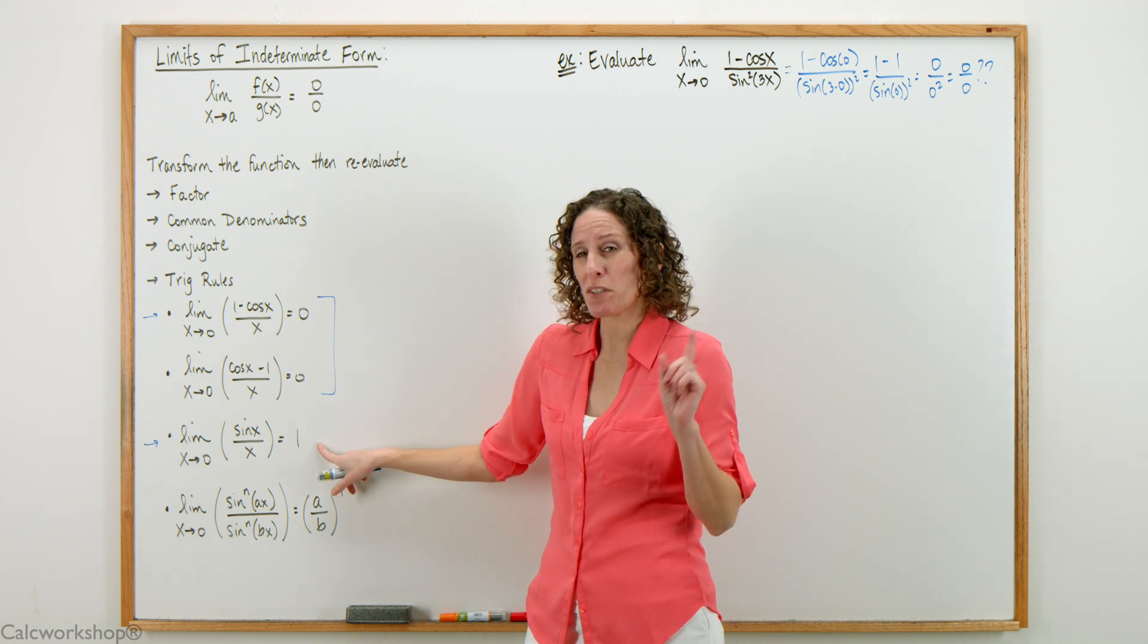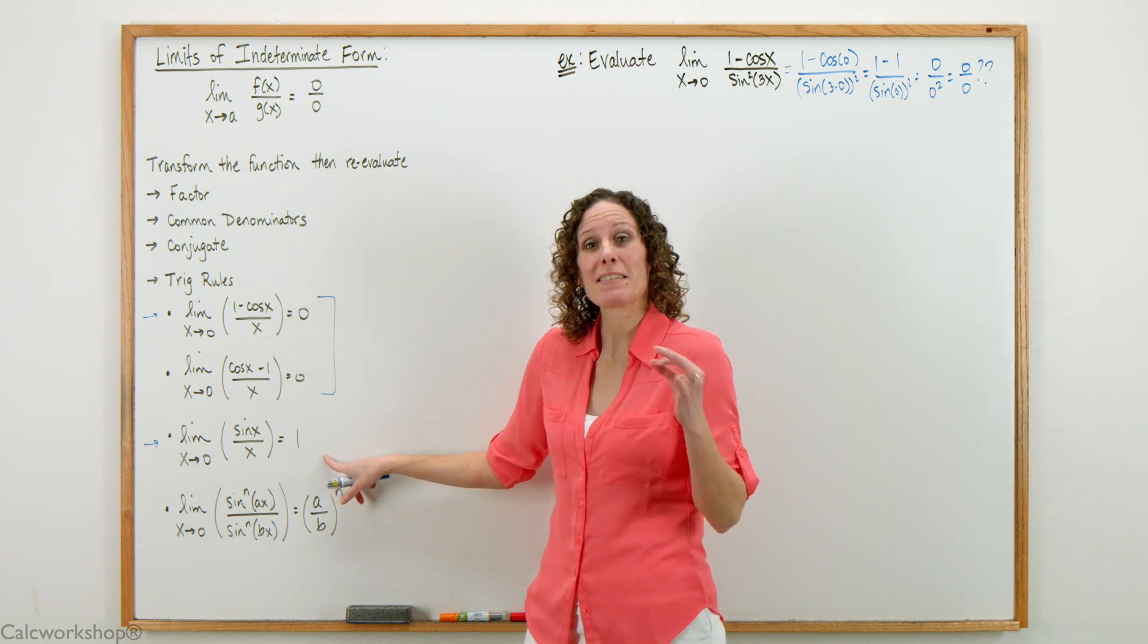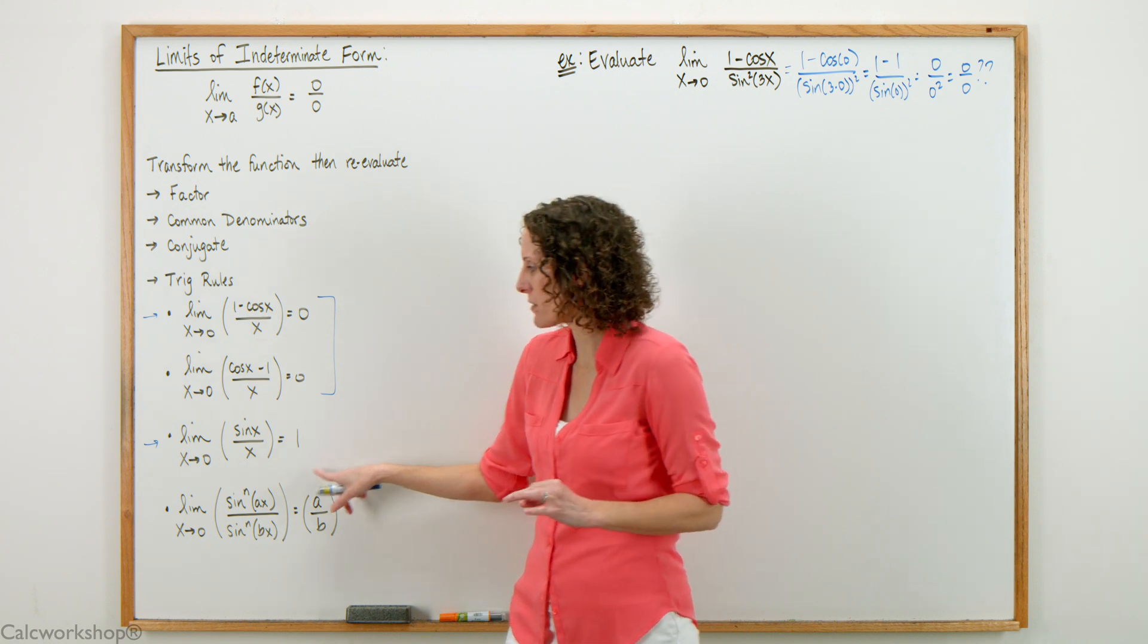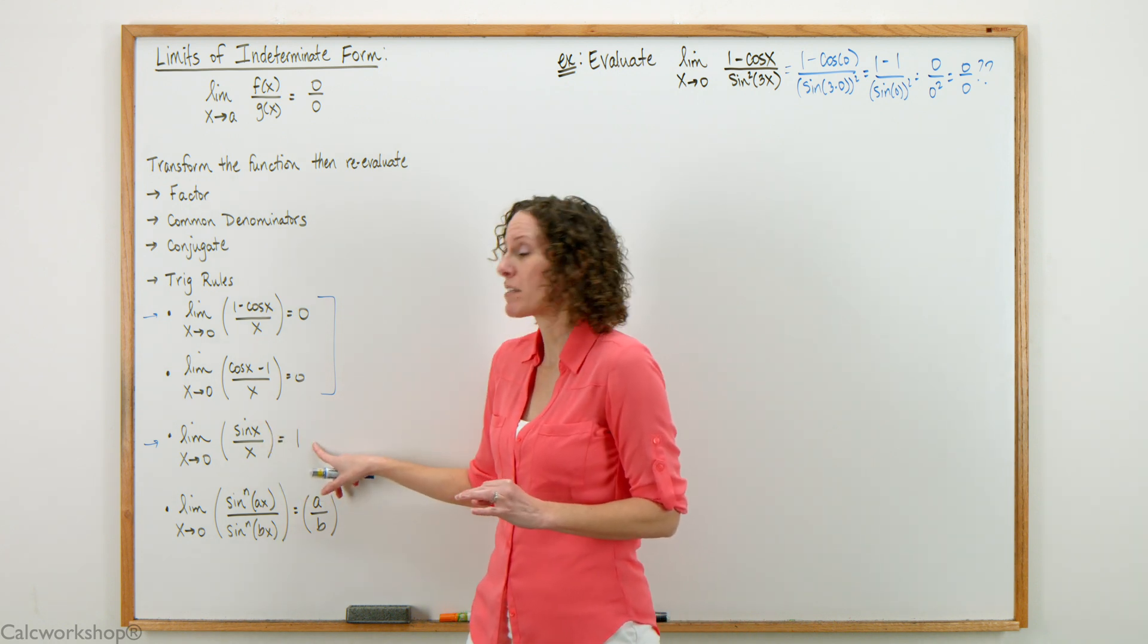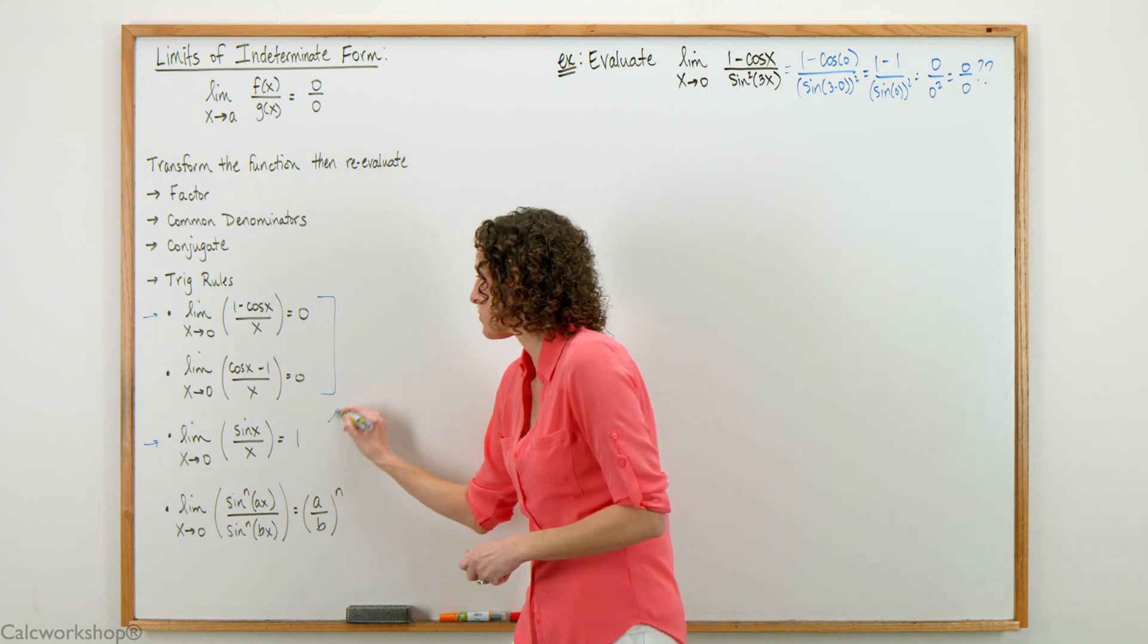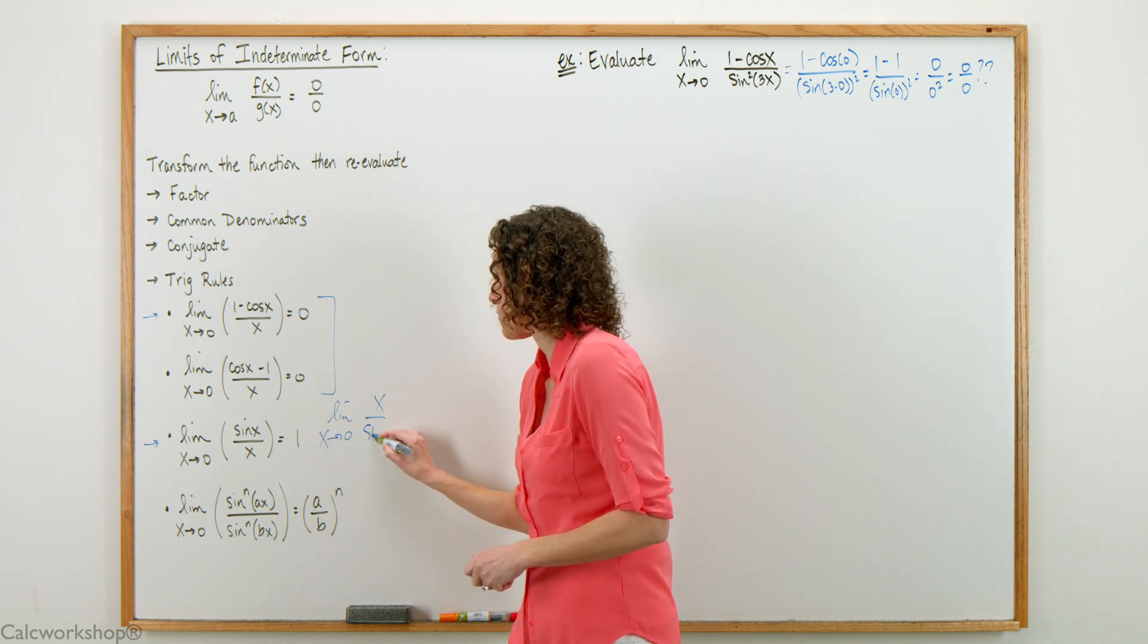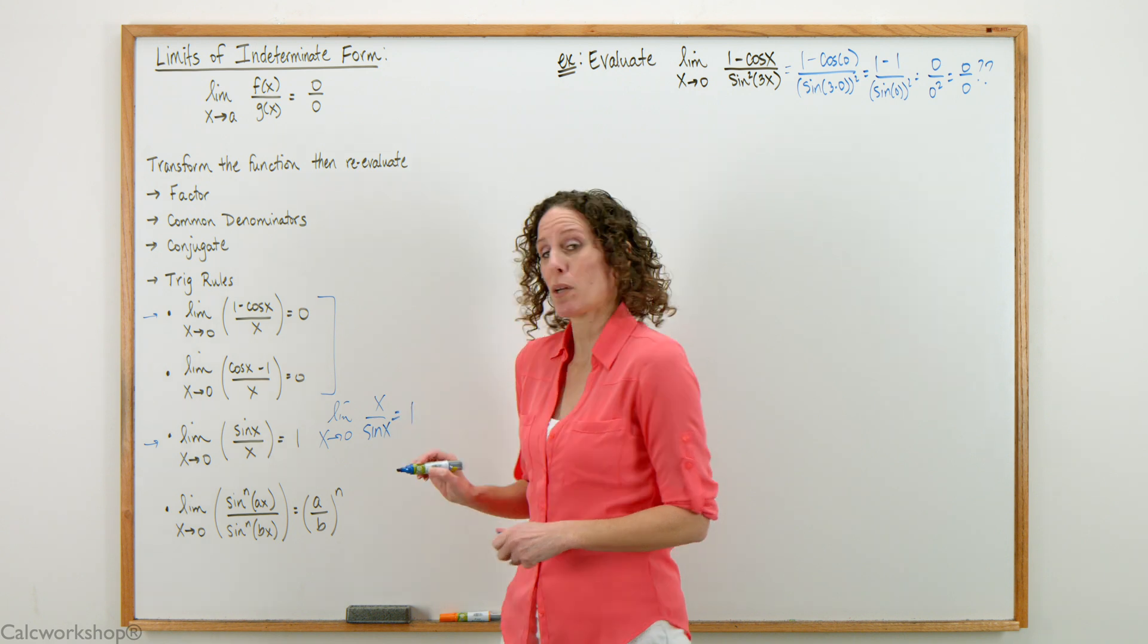Most textbooks will only give you the limit as x approaches 0 of sine of x over x. Whenever we have sine of x over x it equals 1. We could also say x over sine of x equals 1.